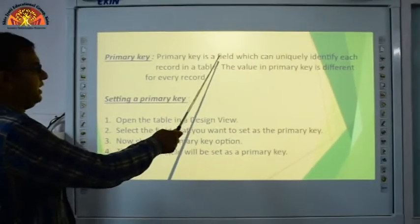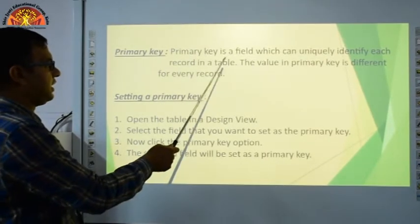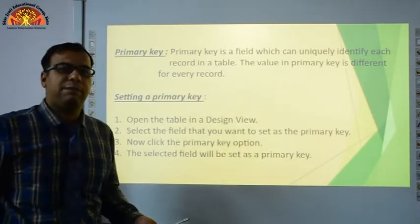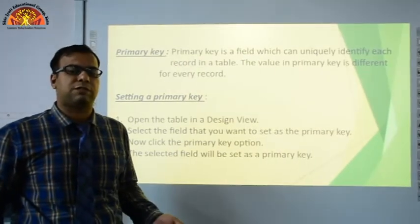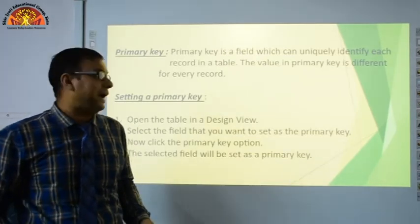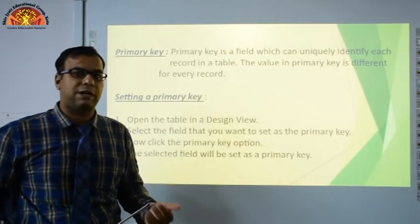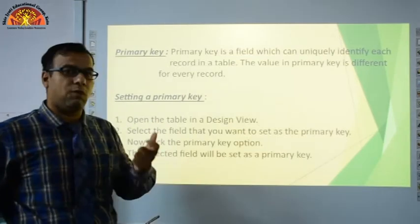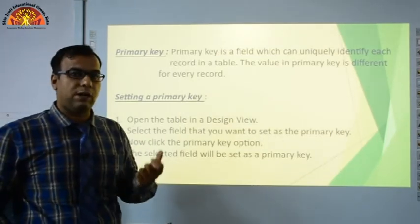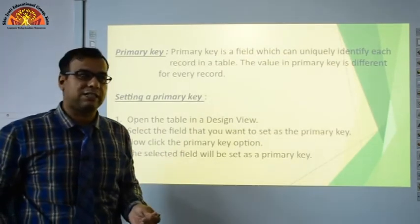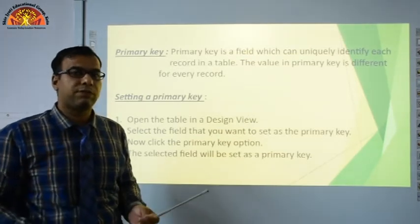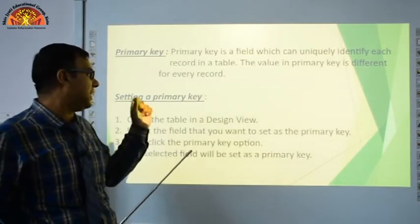Next is Primary Key. A primary key is a field that can uniquely identify each record in a table. The value of a primary key is different for every record. Without a primary key, you cannot generate a proper database, because primary key helps overcome duplicacy. For example, in a student database, roll number can be set as a primary key because each student gets a unique roll number — no two students share the same roll number.